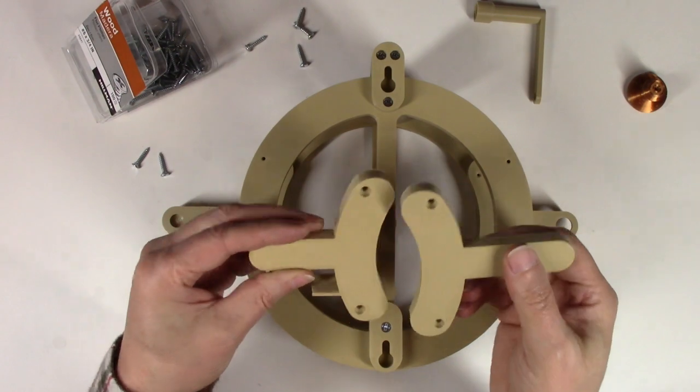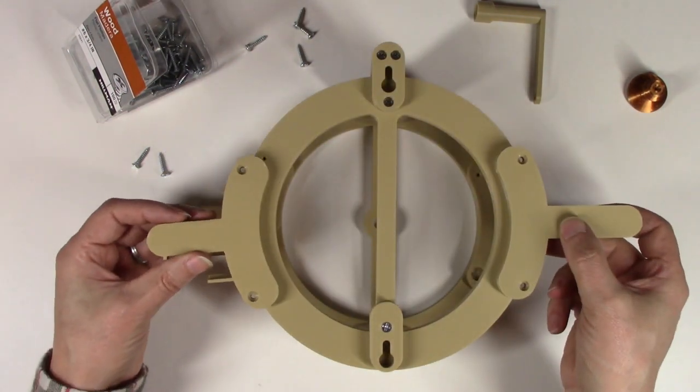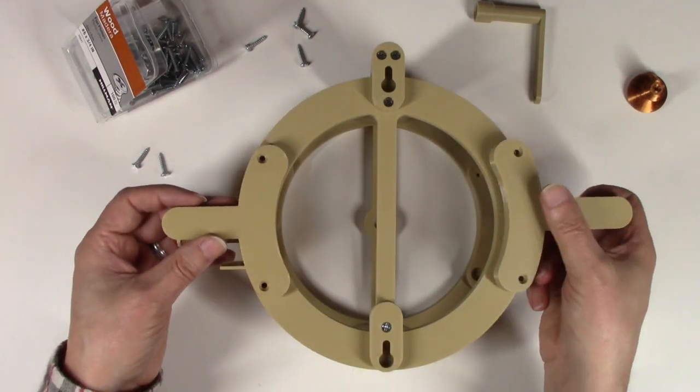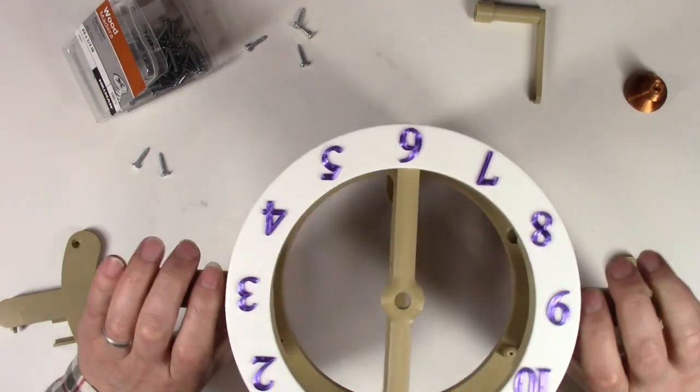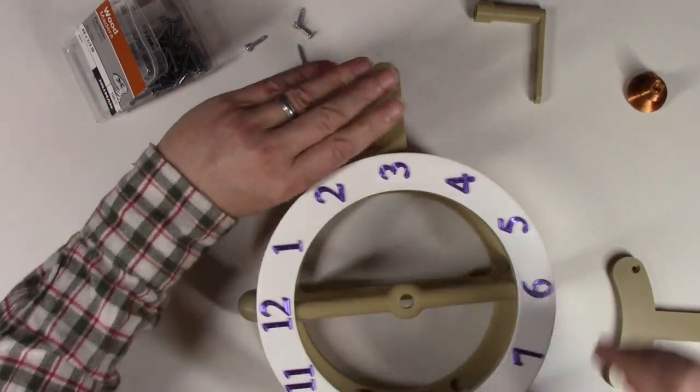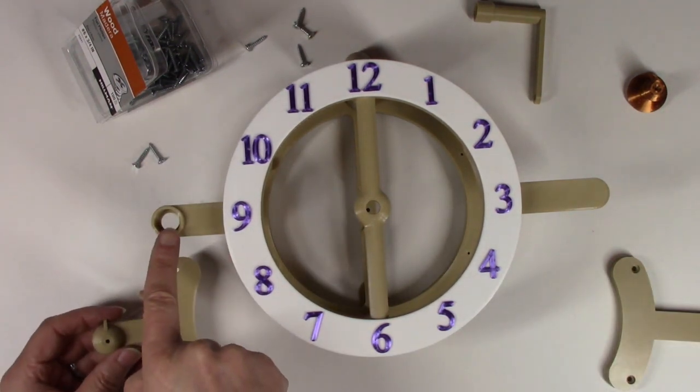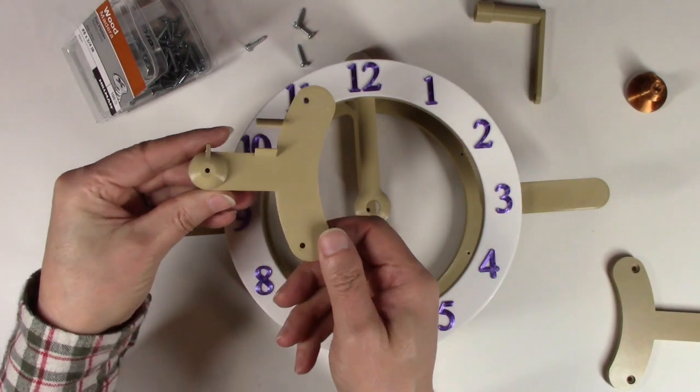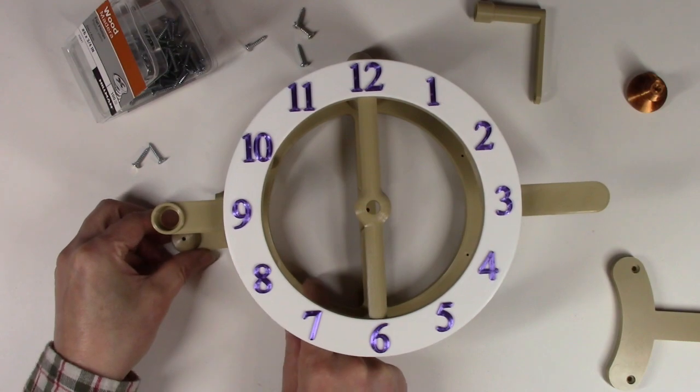The next two pieces look nearly identical and the screws are in the same position, so you need to make sure you put the right one on the right side. Let me turn the clock around really quick. The winding key goes on the left and this is the piece that also goes on the left for the winding key.